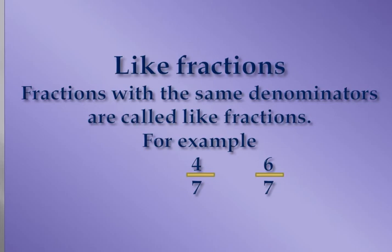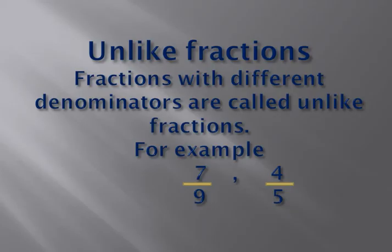What are unlike fractions? Fractions with different denominators are called unlike fractions. For example, 7 by 9 and 4 by 5. In both fractions, you can see the denominator is different. So this is the example of unlike fractions.